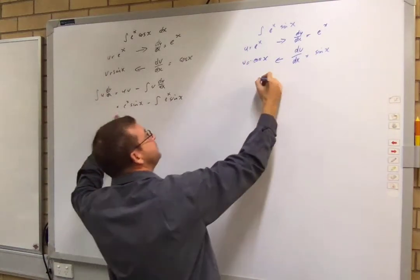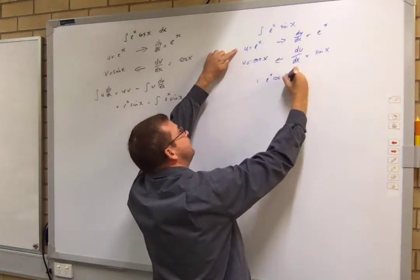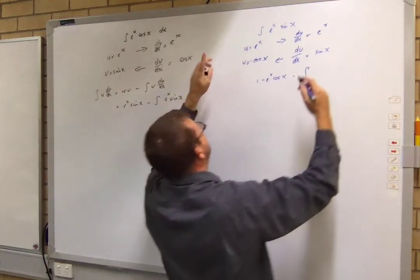And I'm going to write the rule again. I'm just going to go equal UV minus the integral of...